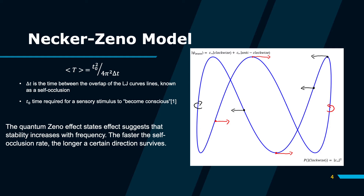The Necker-Zeno model is a model that predicts the expected survival time for a perceived direction of a Lissajous curve — for example, how long we might perceive the curve moving right. The main quantity we need to look at in this equation is the value known as delta t. This is for the purposes of the quantum Zeno effect. Delta t is known as the time between the overlap of the Lissajous curve lines, which is known as a self-occlusion.